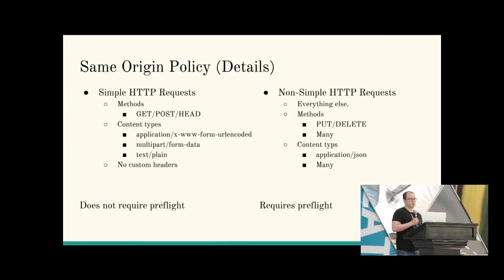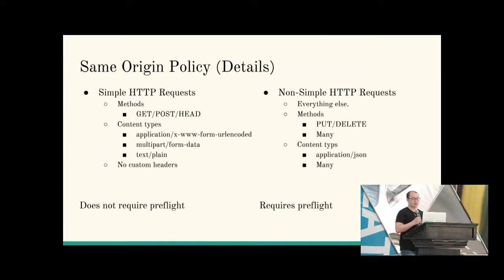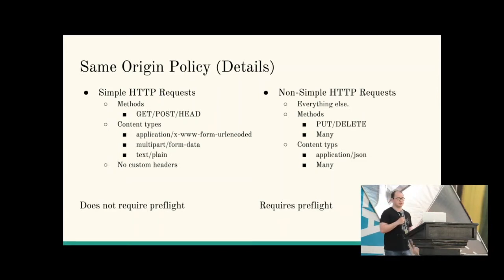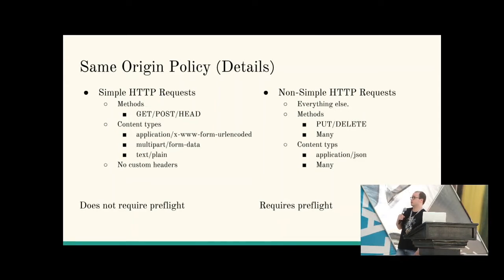Fundamentally there are two different types of HTTP requests in a browser: the simple kind and the non-simple kind. A simple request is one that is either GET, POST, or HEAD, with certain content types — basically a vanilla request you might get from a web form. A non-simple request is the type you see in single page apps where they set the content type to application/JSON, set a custom header, or use PUT and DELETE methods via a REST framework.